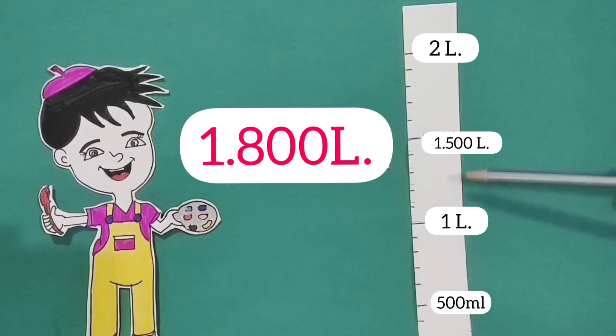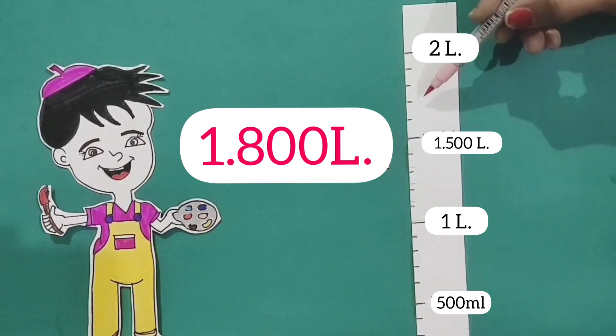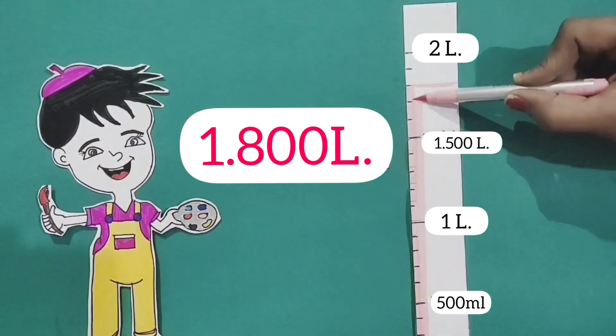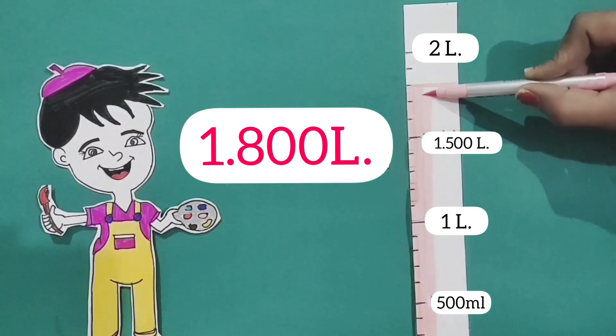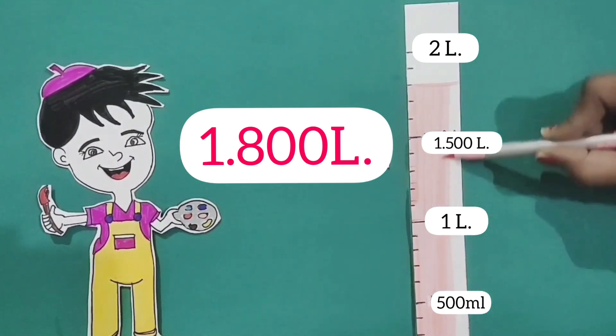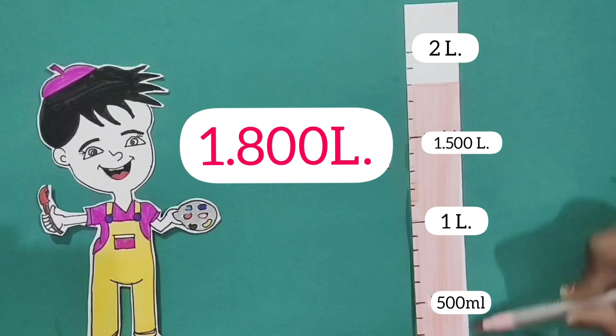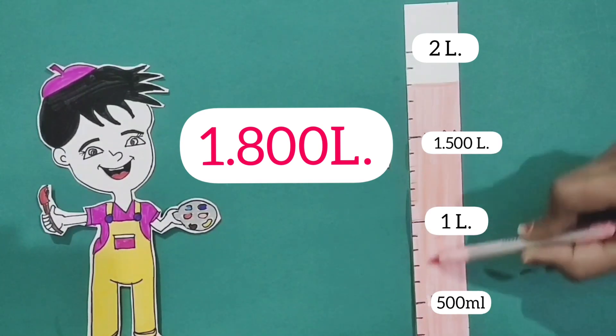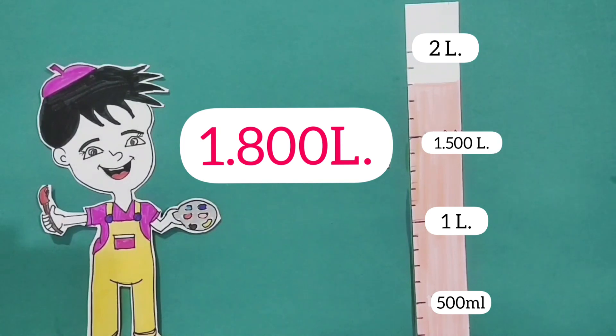Now, the next amount is 1.800 liter. So, first, we'll mark a horizontal line at 1.800 liter or 1,800 milliliters. So, from 1,500 milliliters, we'll count 1,600, 1,700 and 1,800 milliliters. So, up to here, we'll fill the color. So, we'll fill the color up to 1,800 milliliters.